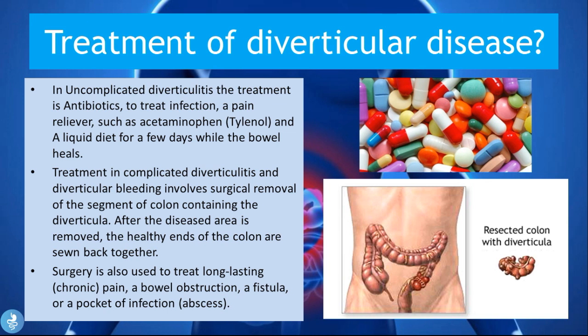In complicated diverticulitis and diverticular bleeding, treatment involves surgical removal of the segment of the colon containing the diverticula, after which the healthy ends of the colon are sewn back together. Surgery is also used to treat long-lasting or chronic pain, bowel obstruction, a fistula, or an abscess. As shown in the bottom right picture, the affected portion containing the diverticula is removed and the healthy segments are rejoined.